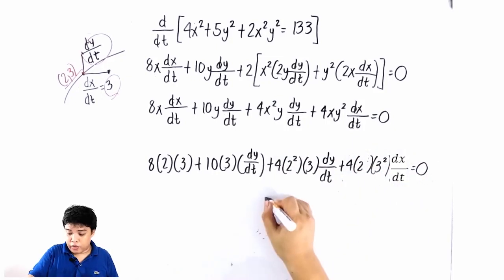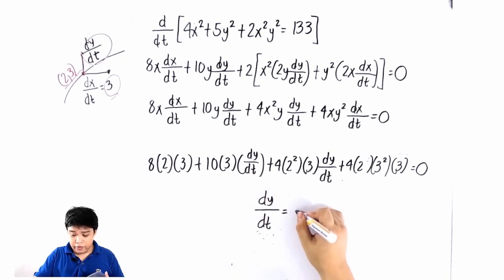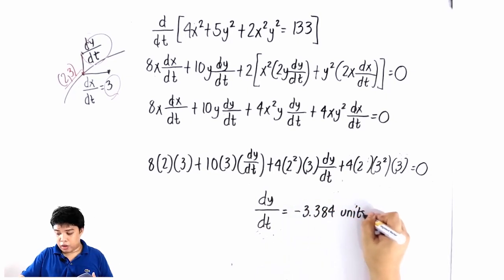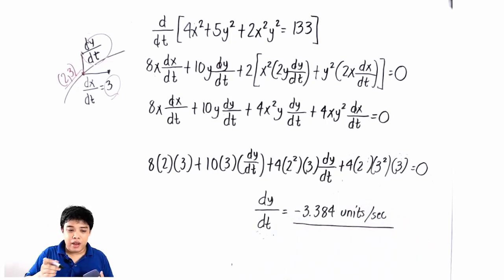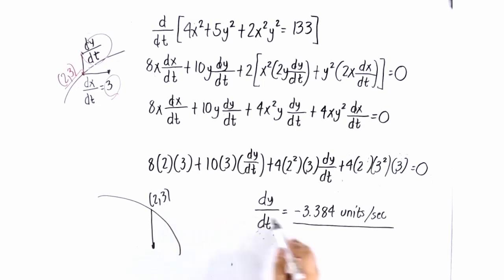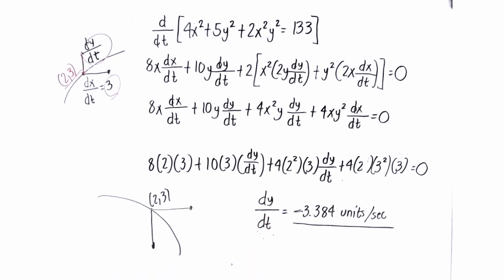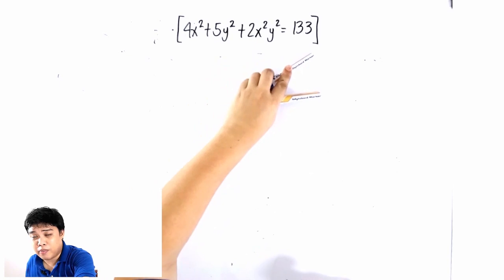Solving for dy/dt, the answer is −3.384 units per second. The negative answer means the point is moving downward at point (2, 3). If the answer were positive, it would mean the point is also moving upward as it moves to the right.